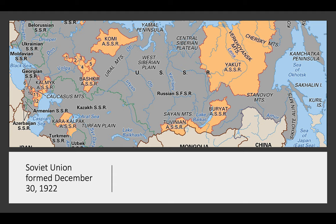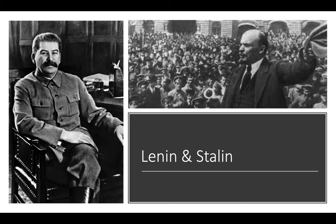The Soviet Union was established on December 30, 1922 and eventually consisted of 15 recognizable states. Today we would call them Russia, Kazakhstan, Ukraine, Turkmenistan, Uzbekistan, Belarus, Kyrgyzstan, Tajikistan, Azerbaijan, Georgia, Lithuania, Latvia, Estonia, Moldova, and Armenia.